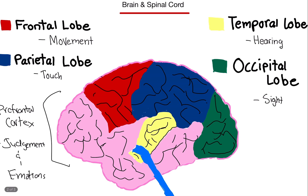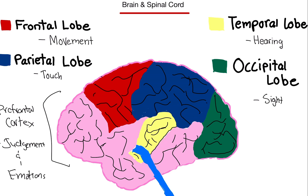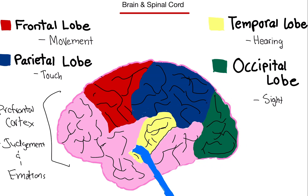The next lobe is the temporal lobe, which is the yellow part. That is for hearing — so anything you hear needs to be processed in the temporal lobe. The last lobe is the occipital lobe, in the back, the green part. That's for sight, so whatever you see needs to be processed in the occipital lobe.